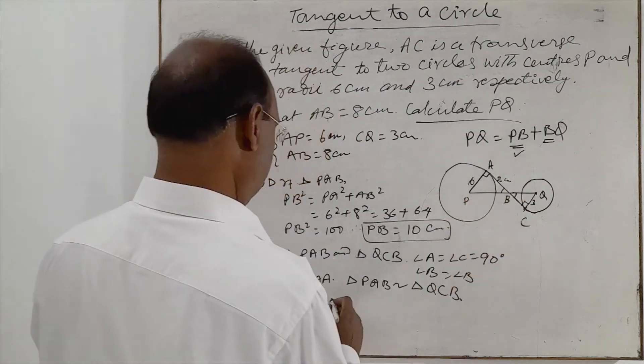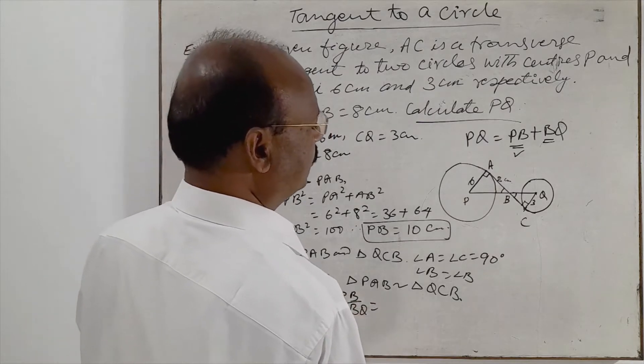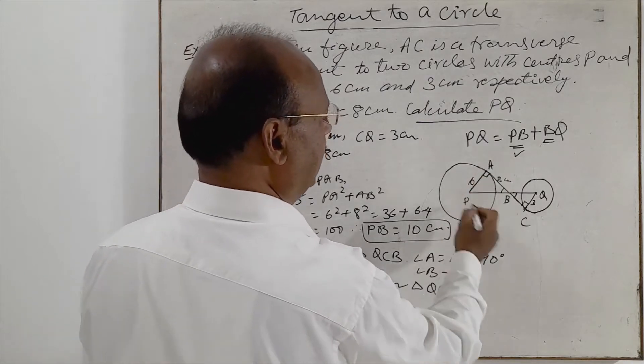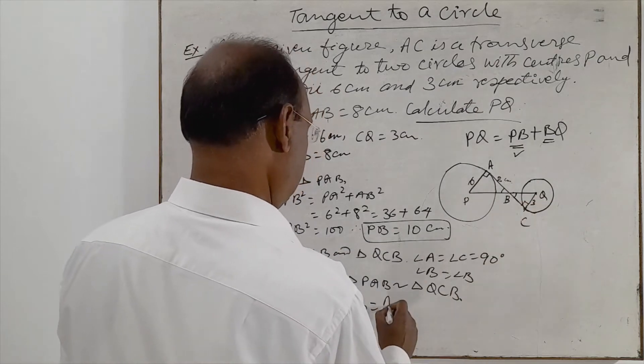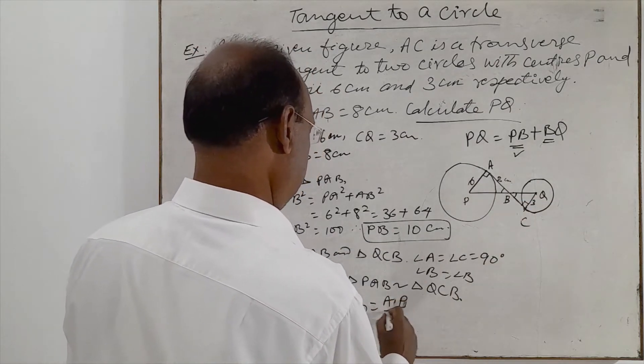Therefore, PB by BQ is equal to AP by QC.